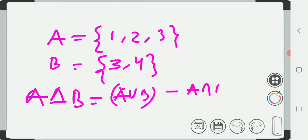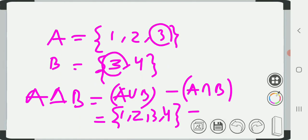So what is A union B? 1, 2, 3, 4. And intersection, the common element between A and B, that is 3. The difference is equal to 1, 2, 4.